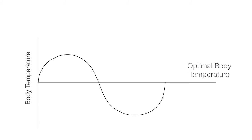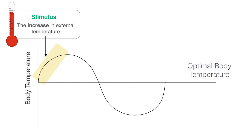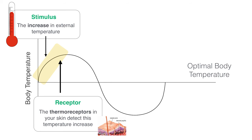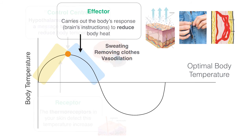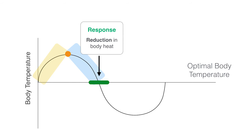For the home stretch, let's take everything we've learned about body temperature and homeostasis and apply it to that sine graph we previously used. The start of the sine graph represents the stimulus, which is the increase in external temperature. Going along the graph, the thermoreceptors in our skin detect this temperature increase. This information is sent to the control center, or brain. The hypothalamus then sends a message to the effectors telling them to reduce body temperature. Represented by the downward slope, the effectors carry out the body's response to lower your body heat. This response can be stripping, sweating, or vasodilation.